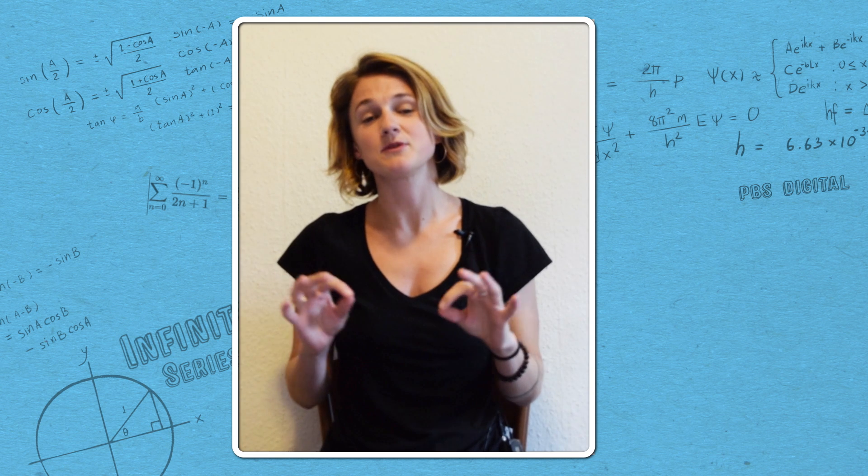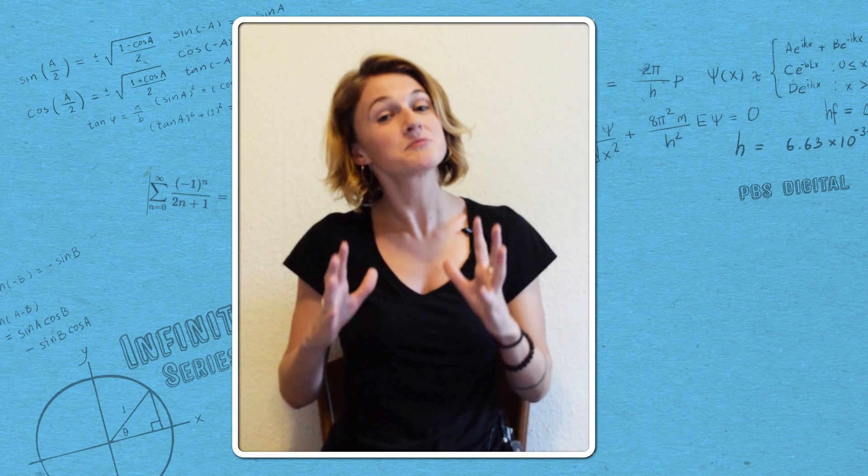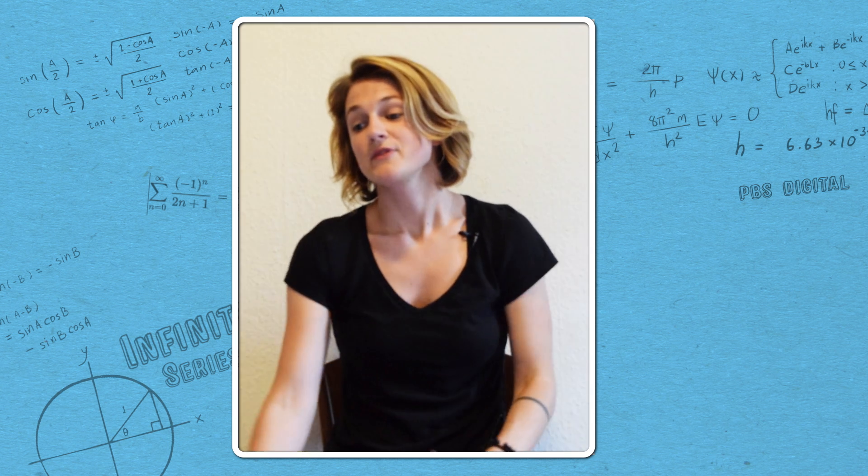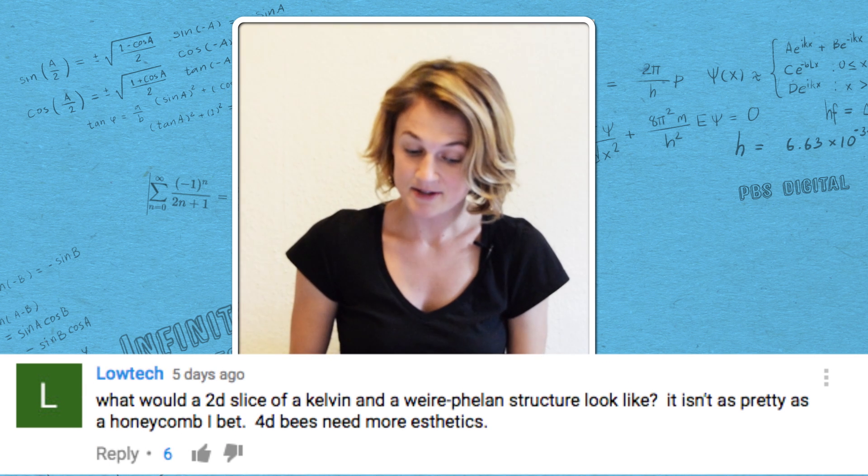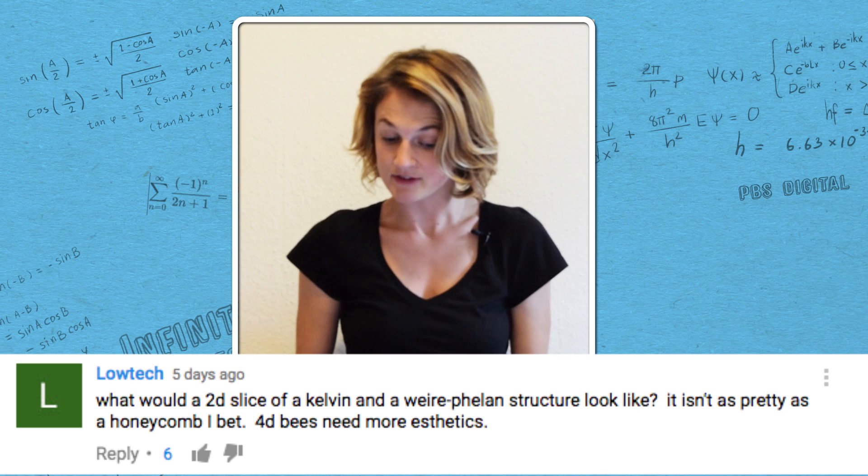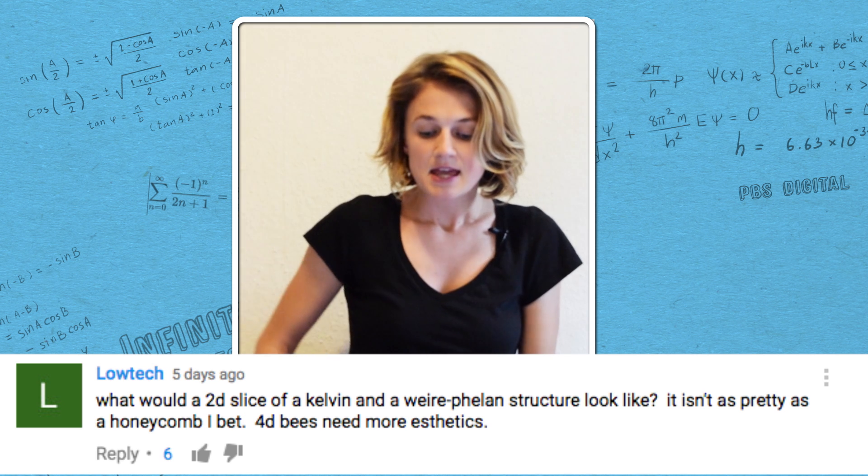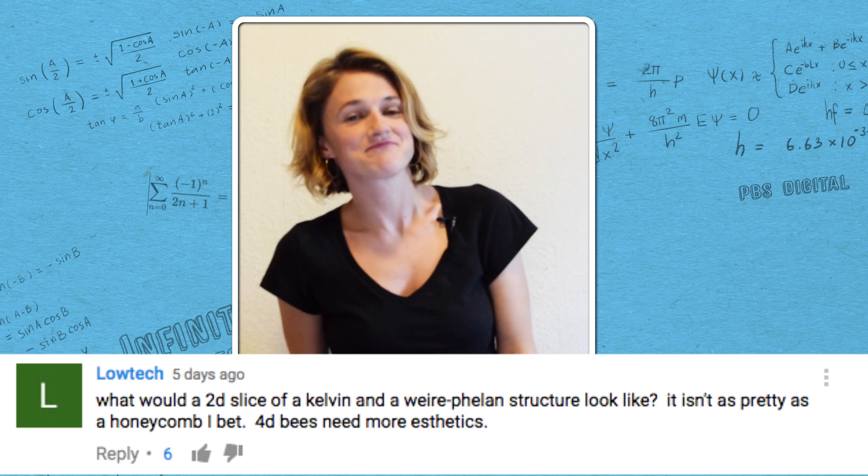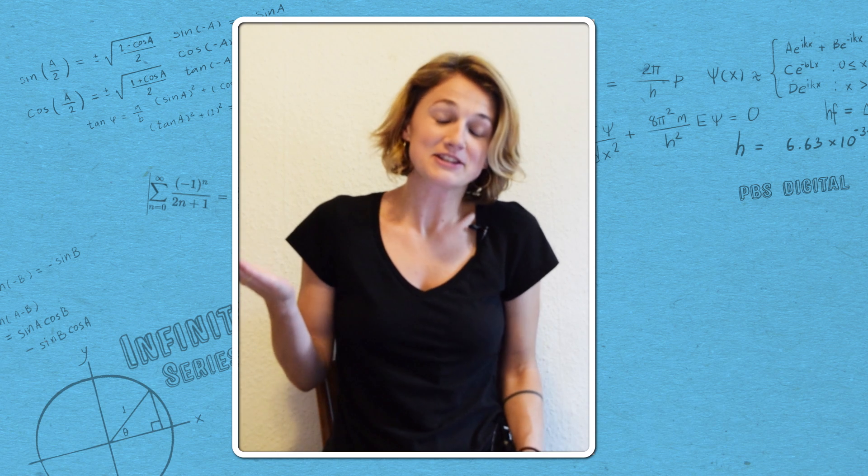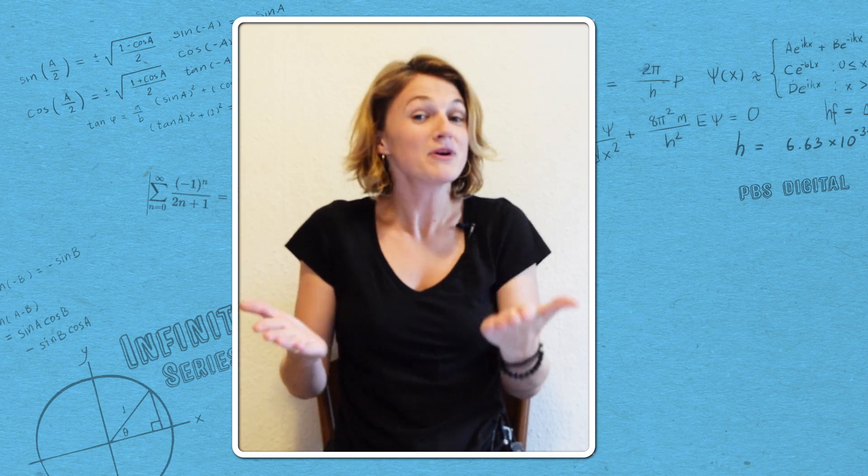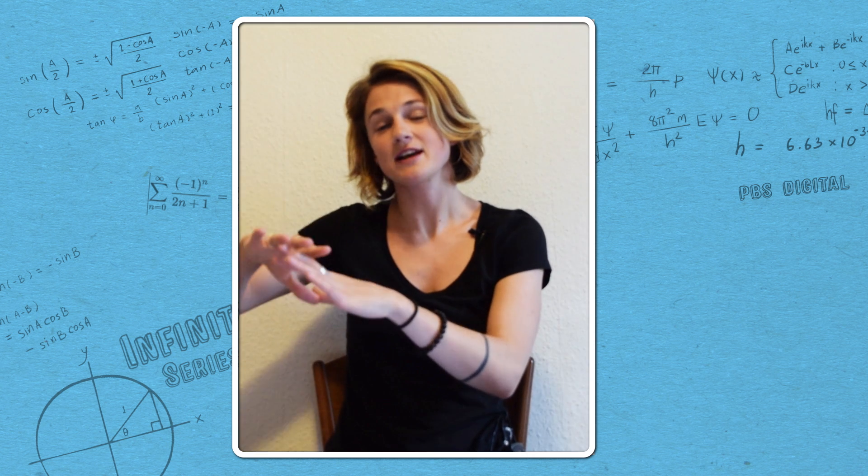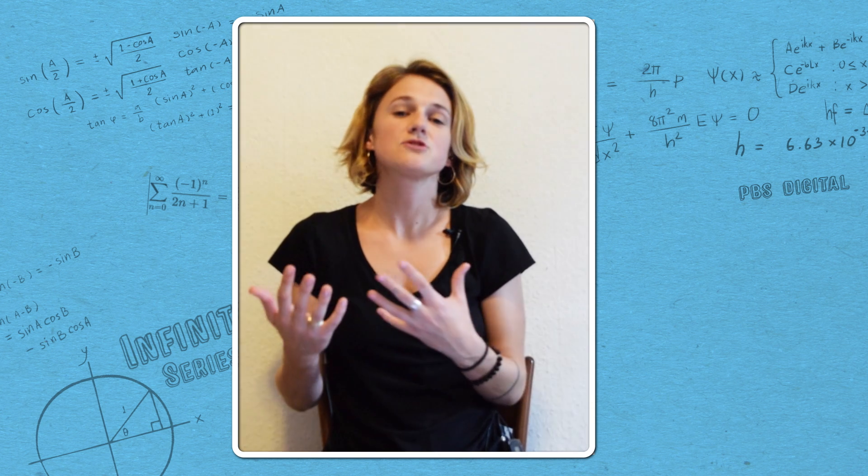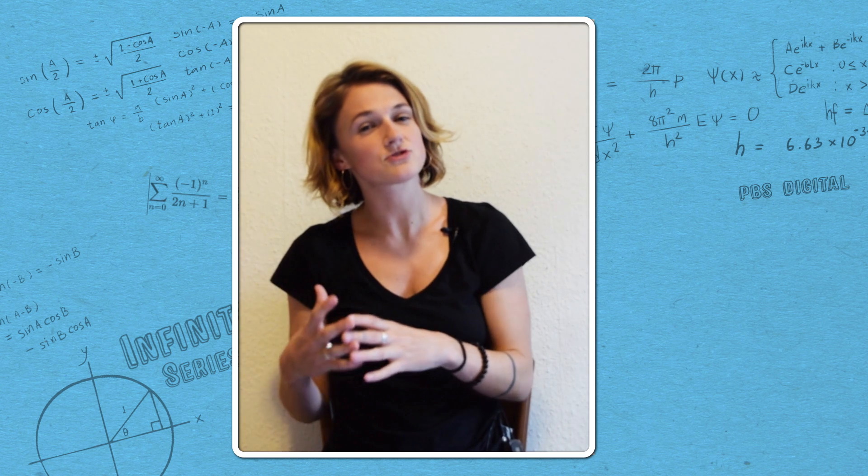All right. So now I want to respond to a few comments on our episode about the honeycombs of four-dimensional bees, featuring Joe from It's Okay to Be Smart. So, Low Tech made a cool comment. They said, What would a 2D slice of a Kelvin and a Weaire-Phelan structure look like? It isn't as pretty as a honeycomb, I bet. 4D bees need more aesthetics. So, it's a little funny because there's a point to this. That the Weaire-Phelan structure has a sort of irregularity that hexagons don't. Hexagons are very nice and symmetric. And so they do have some kind of aesthetic that this Weaire-Phelan structure doesn't.